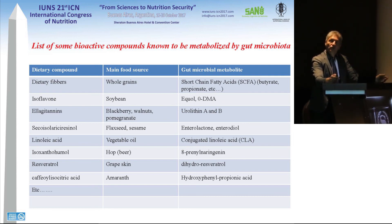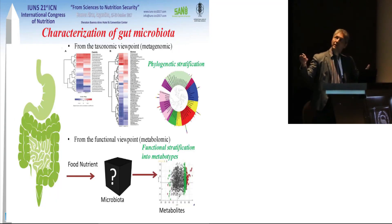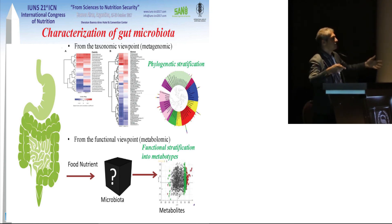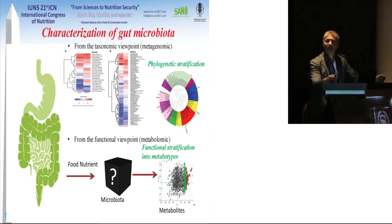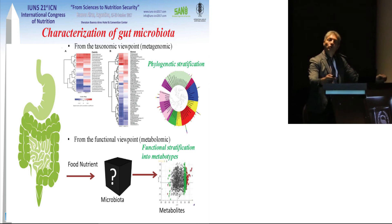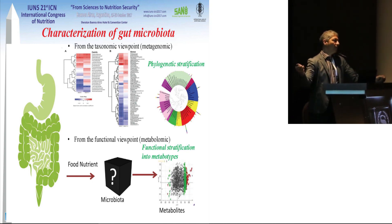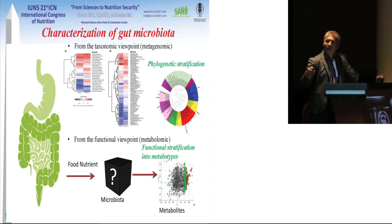A lot of people speak about the characterization of gut microbiota from a taxonomic viewpoint through metagenomics to know the names of the microorganisms. But I think another very important approach is to characterize the gut microbiota from the functional point of view — what is it doing? Metabolomics is the tool for knowing that, and it can provide a stratification into different metabotypes, which can perhaps explain the health effects we can obtain.